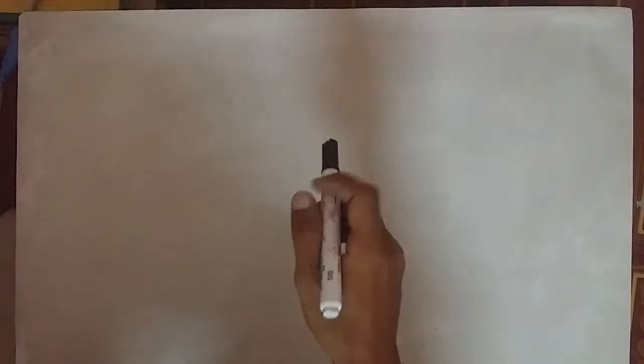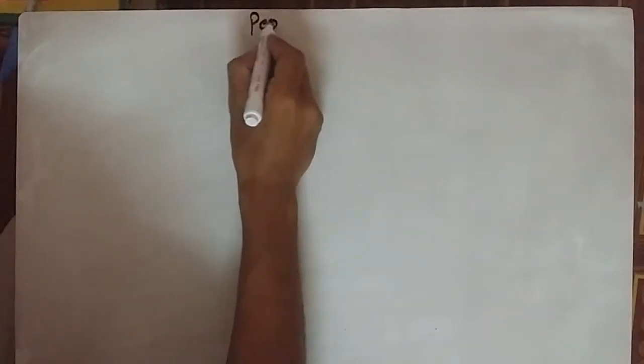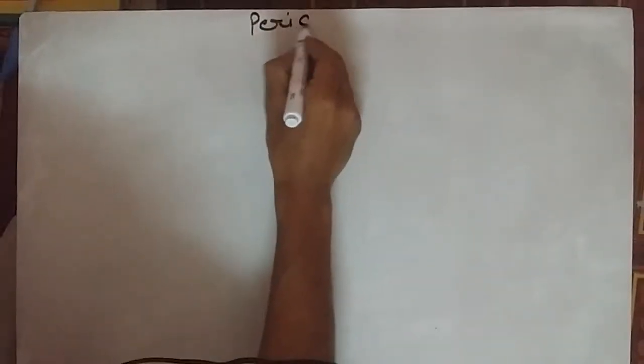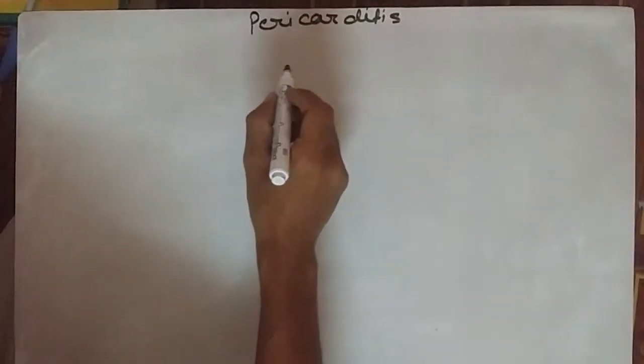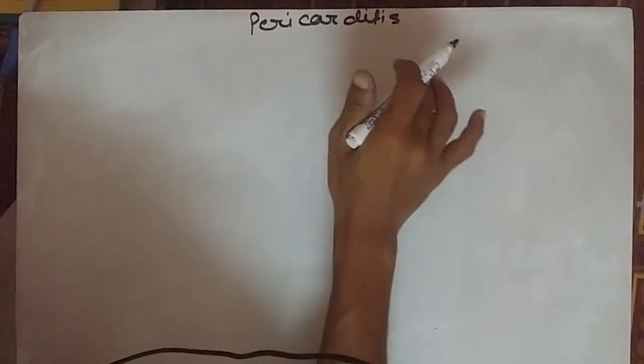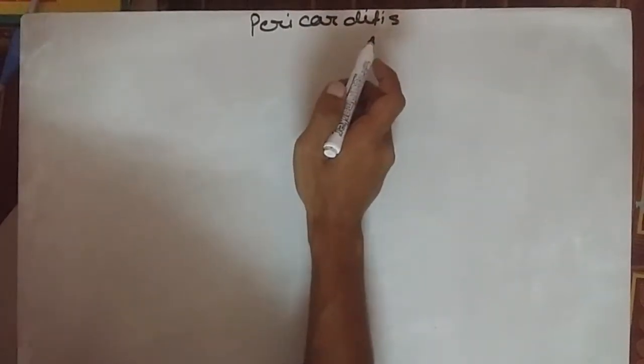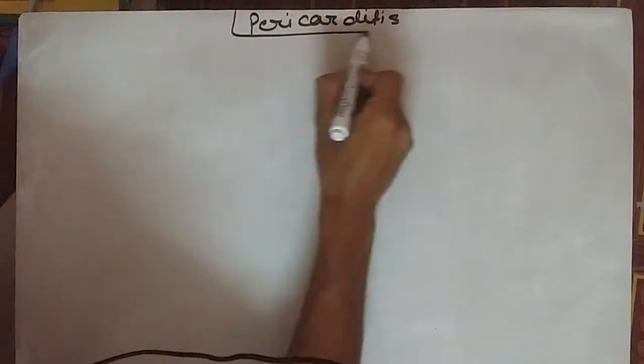Pericardial effusion and cardiac tamponade, starting from acute type of pericarditis. Pericarditis is divided into three types: acute, subacute, and chronic, according to the duration. Acute pericarditis occurs before three months, subacute between three to six months, and chronic takes more than six months.